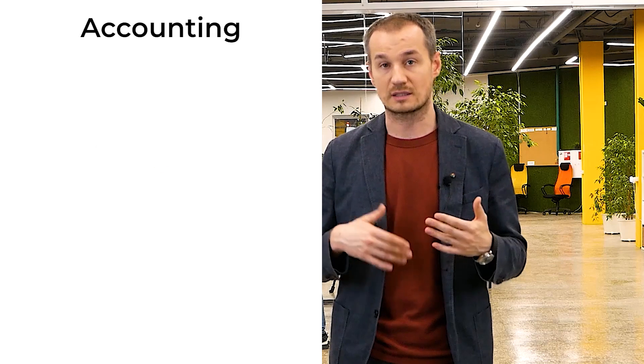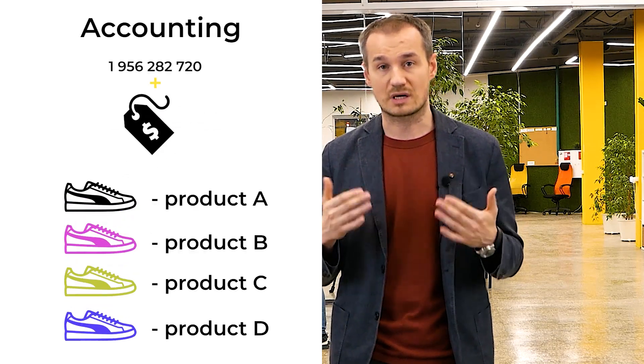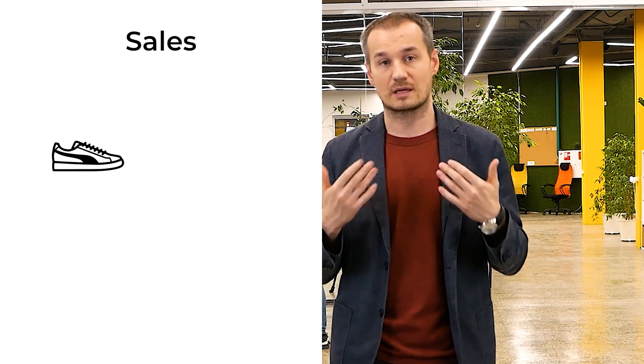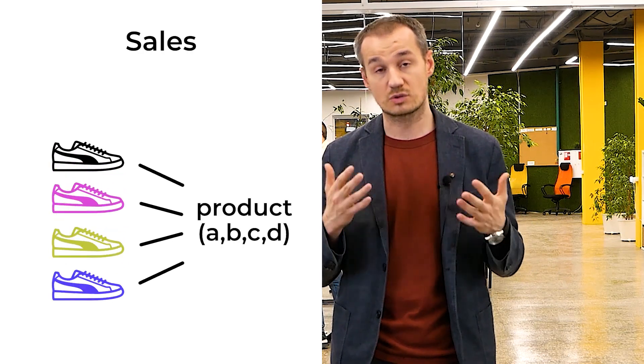Let's imagine that we have two departments: accounting and sales. Bounded context is a certain set of values shared in a single domain model when applied in a specific framework — in other words, it's a common slang. For example, the term 'product' has different meanings for our sales and accounting departments. In accounting, a product will be defined by an article and a price. For the sales department, the meaning of a product will be more customer-oriented — for example, a certain model of sneakers, even if it has different sizes, will be considered as the same product.